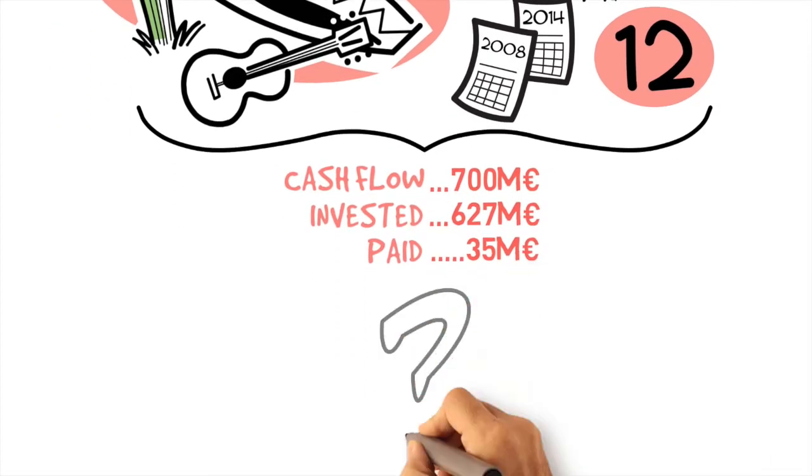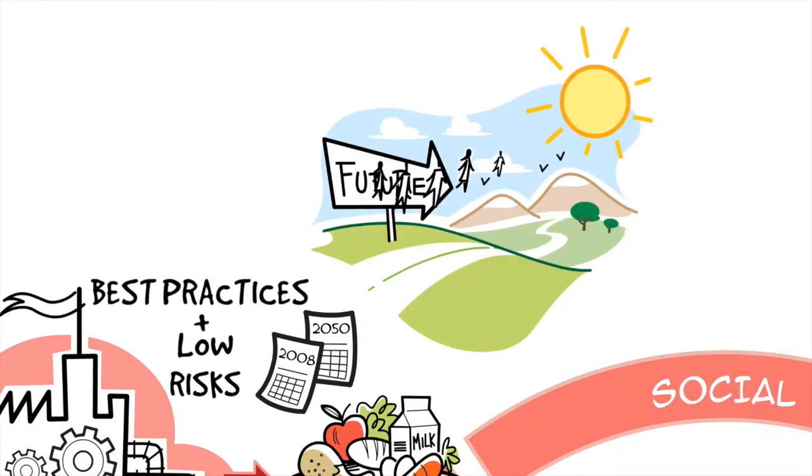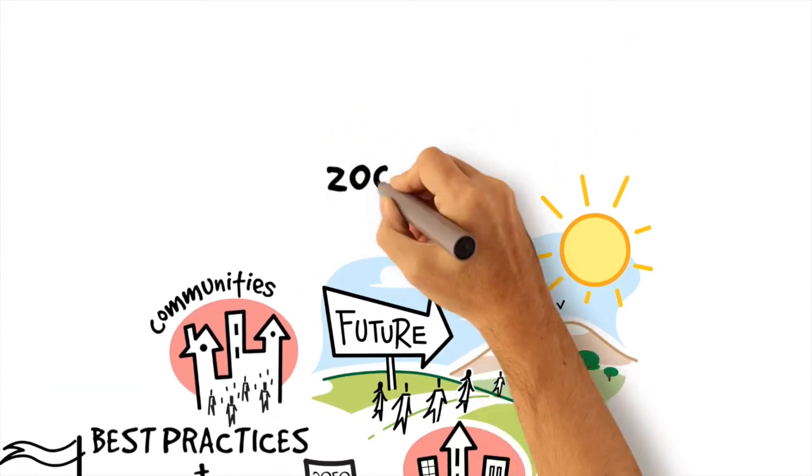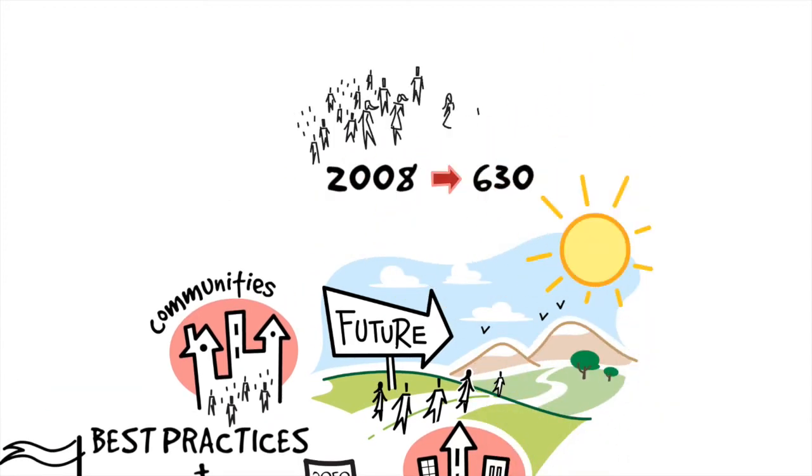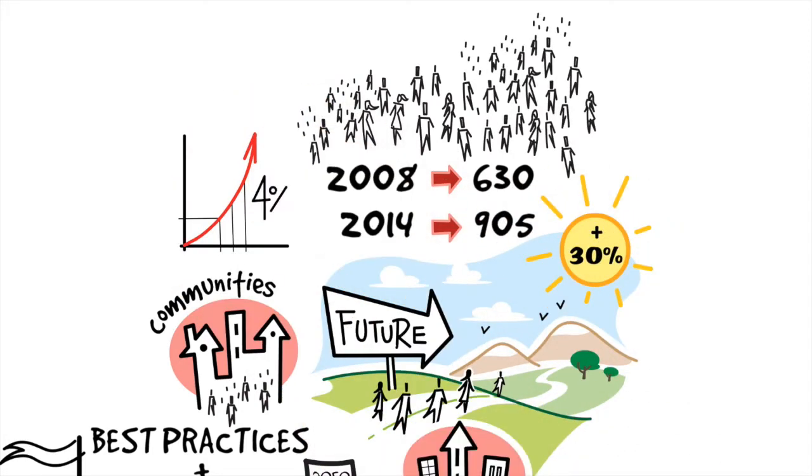But what else should a company do? Companies are expected to ensure a promising future both to their employees and to their neighboring communities. In 2008, in EDPR, we were 630. Now we are 905, while the unemployment rate has increased 4% in Europe.